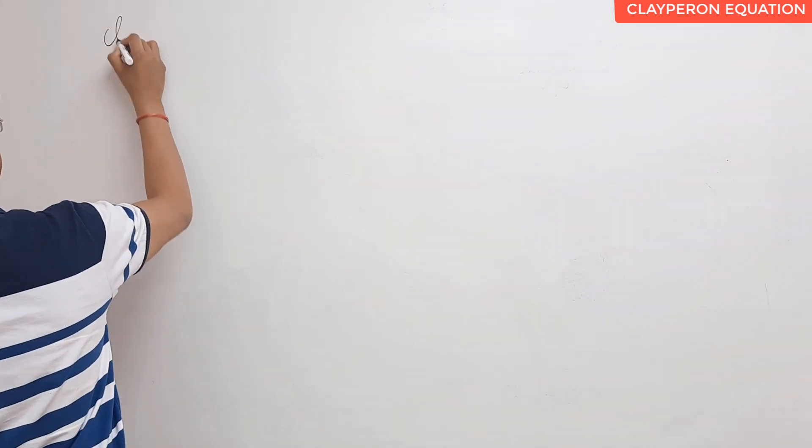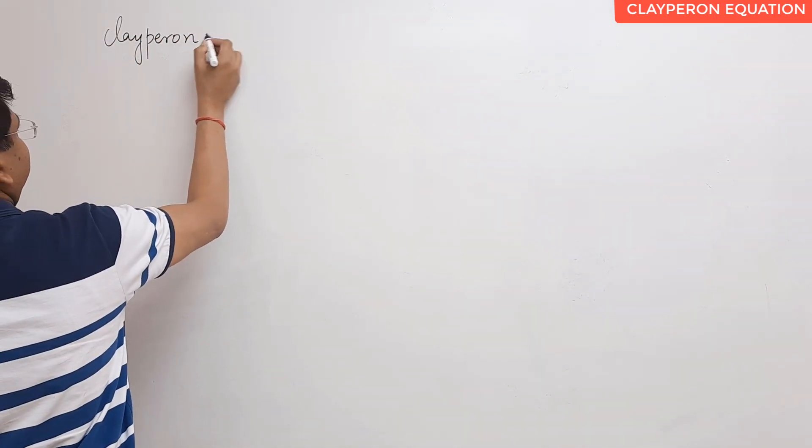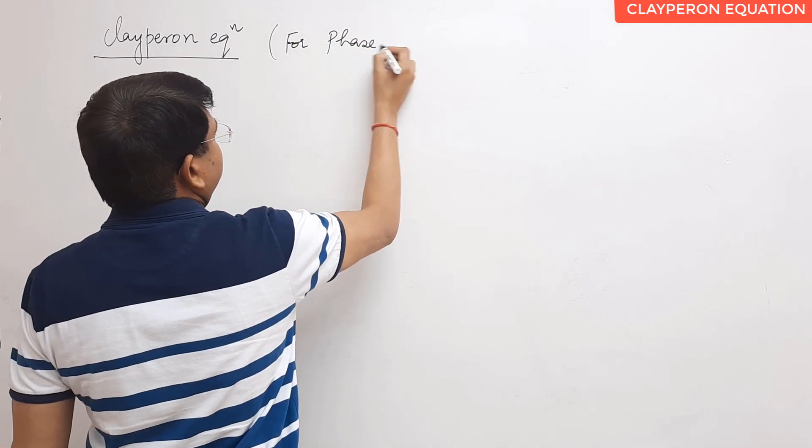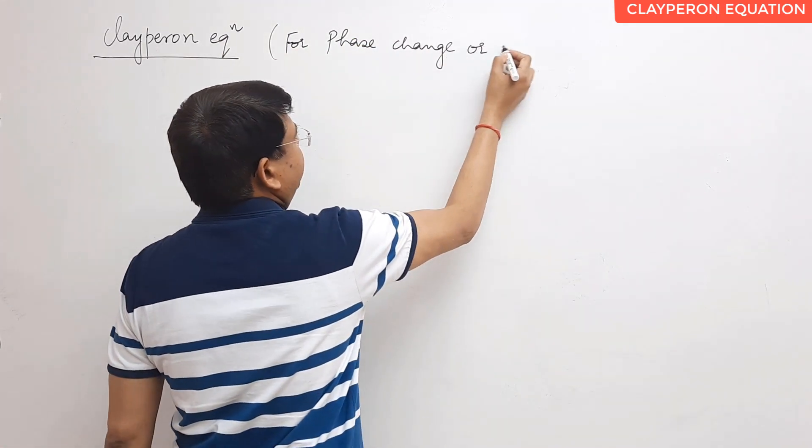Hello dear students. There are a few things which are always important for Olympiad or even JEE Advanced, so from time to time I bring such topics for your better understanding of physical and inorganic chemistry. Today I'm going to talk about the Clapeyron equation, which has been quite important for phase transformation. Write the heading: Clapeyron Equation for Phase Change or Phase Transformation.